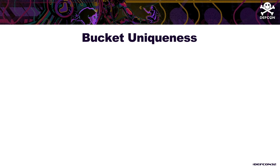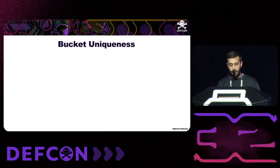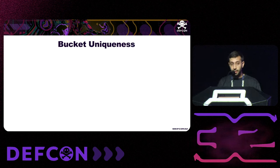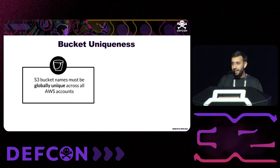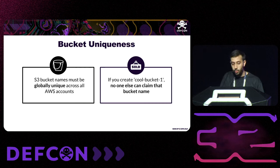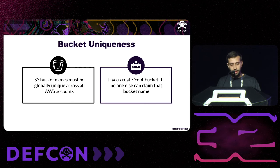Let's align on some common knowledge about S3 buckets, one of AWS's first services. S3 bucket names must be globally unique across all of AWS. For example, if you create a bucket called "cool-bucket-one," no one else on AWS can claim that name — it will be available only under your account.